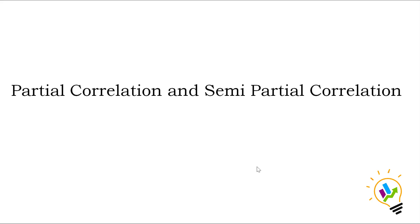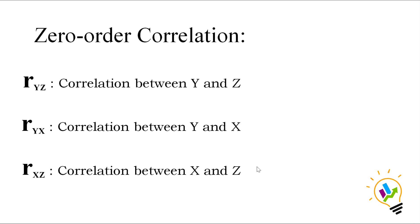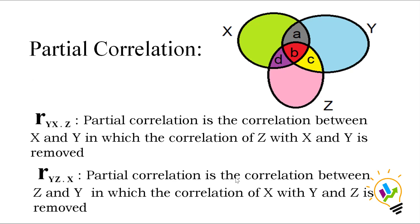Welcome to Easy Statistics. In this video I will be discussing partial correlation and semi-partial correlation. First, let us look at zero-order correlation. Zero-order correlation is a very simple correlation between two variables. For example, r_yz is the correlation between y and z, r_yx is the correlation between y and x, and r_xz is the correlation between x and z. It is called zero-order correlation because we don't have a third variable.